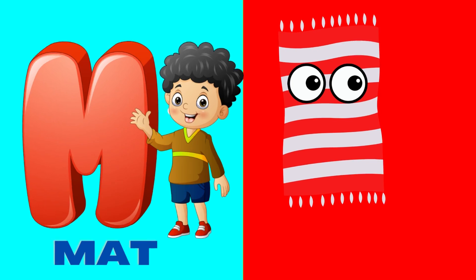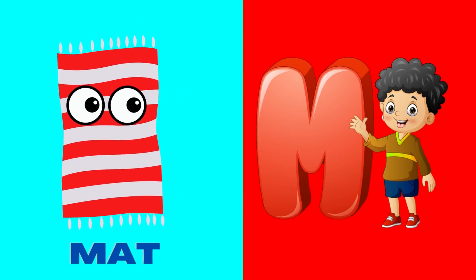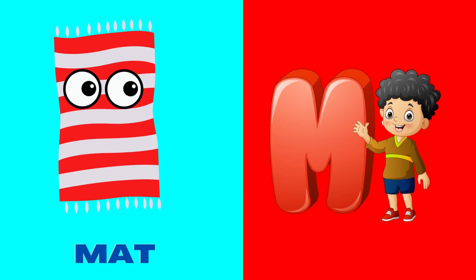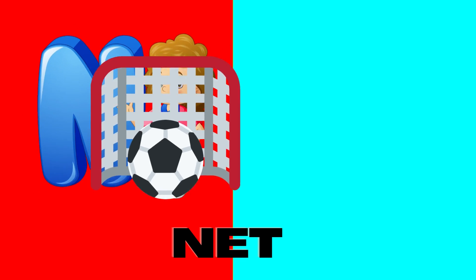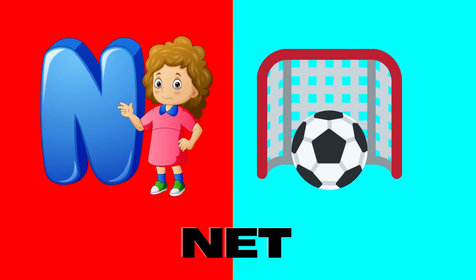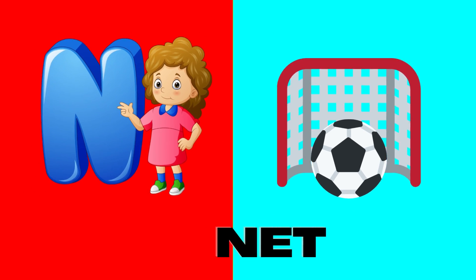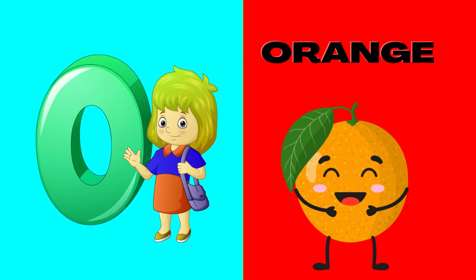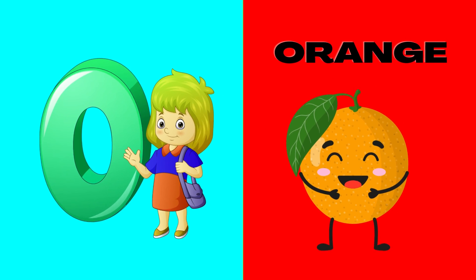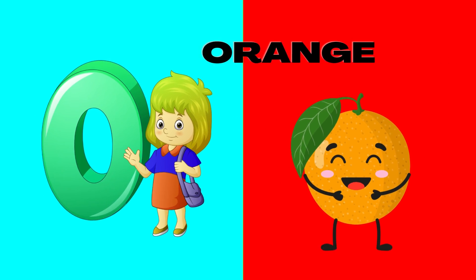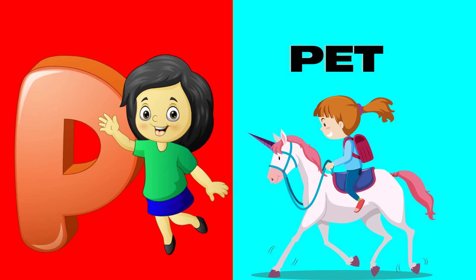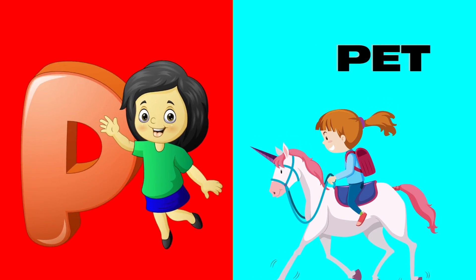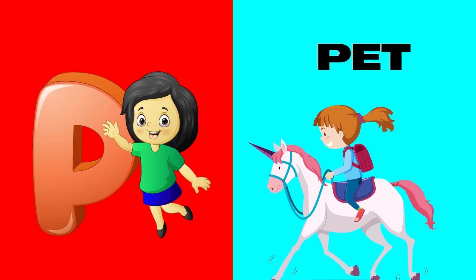M is for mat, m-m-mat. N is for net, n-n-net. O is for orange, o-o-orange. P is for pet, p-p-pet.